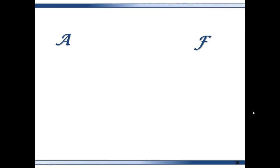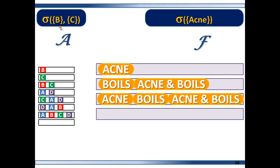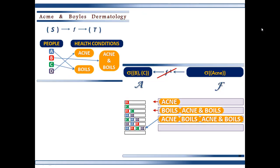Let's do another example. In this case the sigma algebras are formed from a different starting point. This sigma algebra is generated starting with the set B and set C. Sigma algebra F is generated starting with the set 'acne.' And as you can see, not every element in F maps to an element in A. So in this case F is not a measurable function. The set 'acne' maps to D, but in sigma algebra A there is no set that contains just D, so this set has nowhere to go. Similarly, 'boils' maps to A and C, and 'acne and boils' maps to B, so you'd need a set containing A, B, and C — and there is none. So F is not a measurable function.